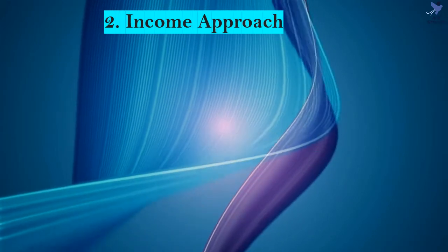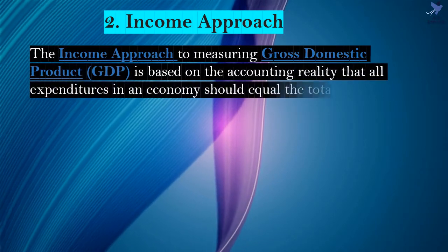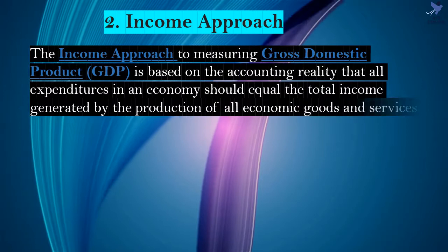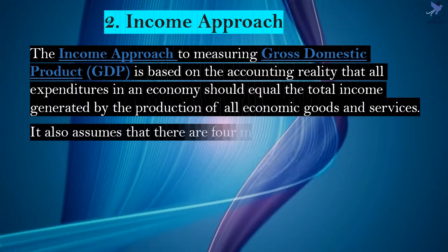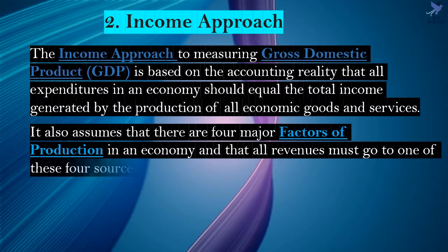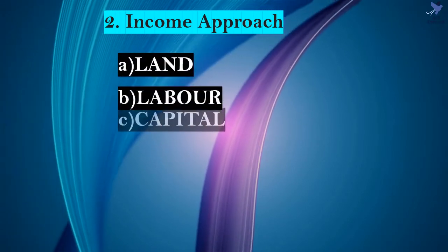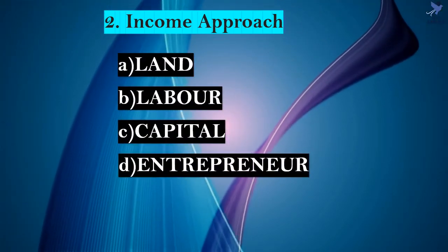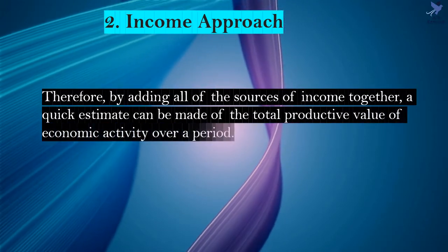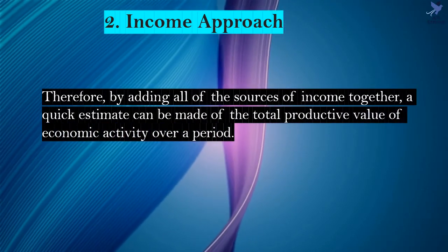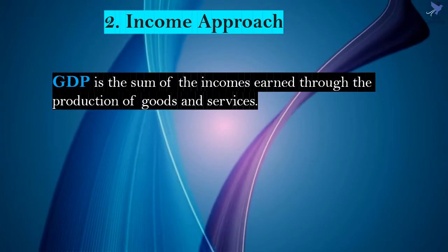Now let's see how GDP is measured through the income approach. The income approach to measuring GDP is based on the accounting reality that all expenditures in an economy should equal the total income generated by the production of all economic goods and services. It also assumes there are four major factors of production: land, labor, capital, and entrepreneur. By adding all of the factor incomes together, a quick estimate can be made of the total productive value of economic activity over a period of time. According to the income approach, GDP is the sum of the incomes earned through the production of goods and services.